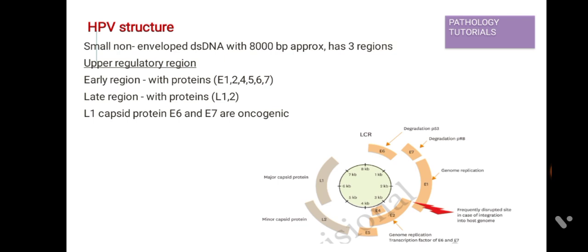Then comes the late region, which encodes proteins called late proteins: L1 and L2. L1 is a capsid protein. E6 and E7 are oncogenic, meaning they have a role in cancer.